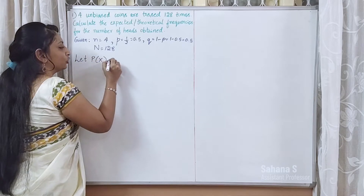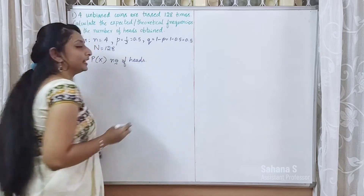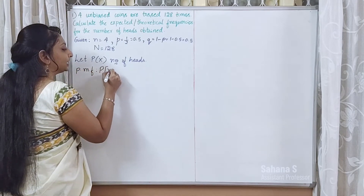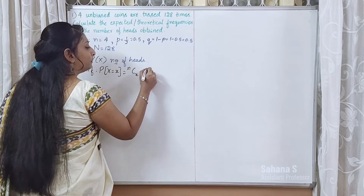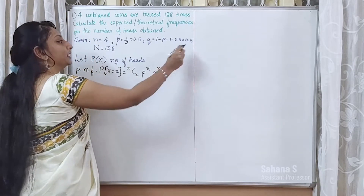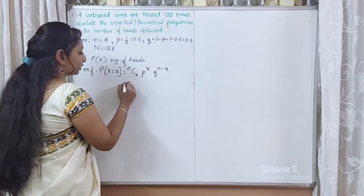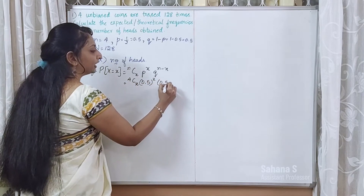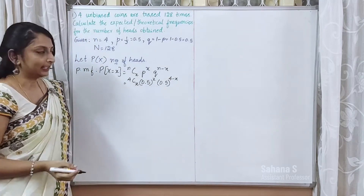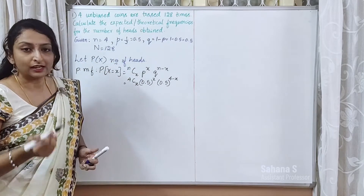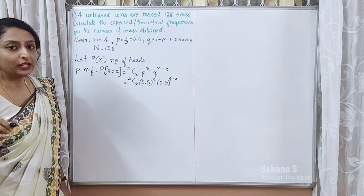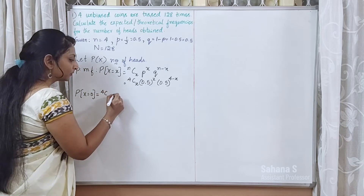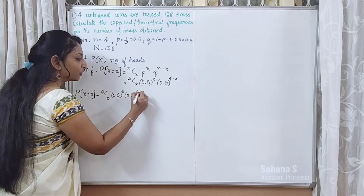Let P(x) denote the number of hits. The PMF is given by P(x) = nCx · p^x · q^(n−x). Substituting values: p^x = 0.5^x and q^(n−x) = 0.5^(4−x). So P(x) = 4Cx · (0.5)^x · (0.5)^(4−x).